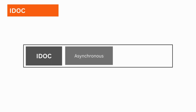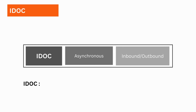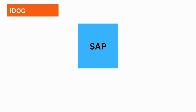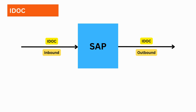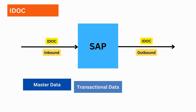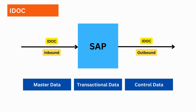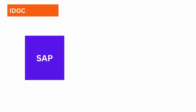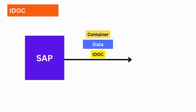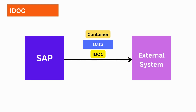IDOCs use asynchronous communication mode and can work with both inbound and outbound integrations. IDOC stands for Intermediate Document. We use IDOCs when we want to exchange information between a SAP system and an external system — for example, to exchange master data, transaction data, and control data. IDOC is essentially a data container to exchange information between two processes or systems.